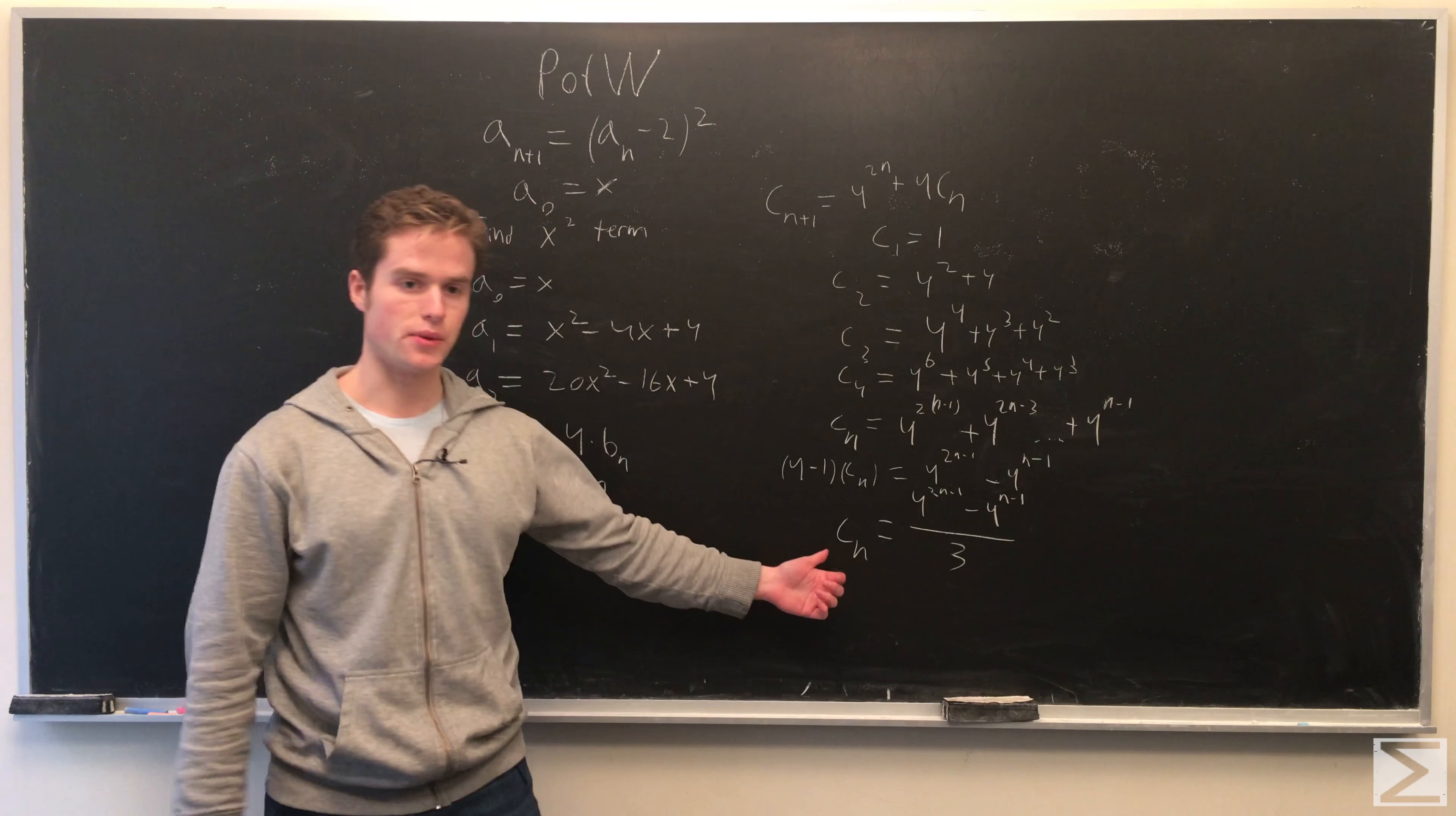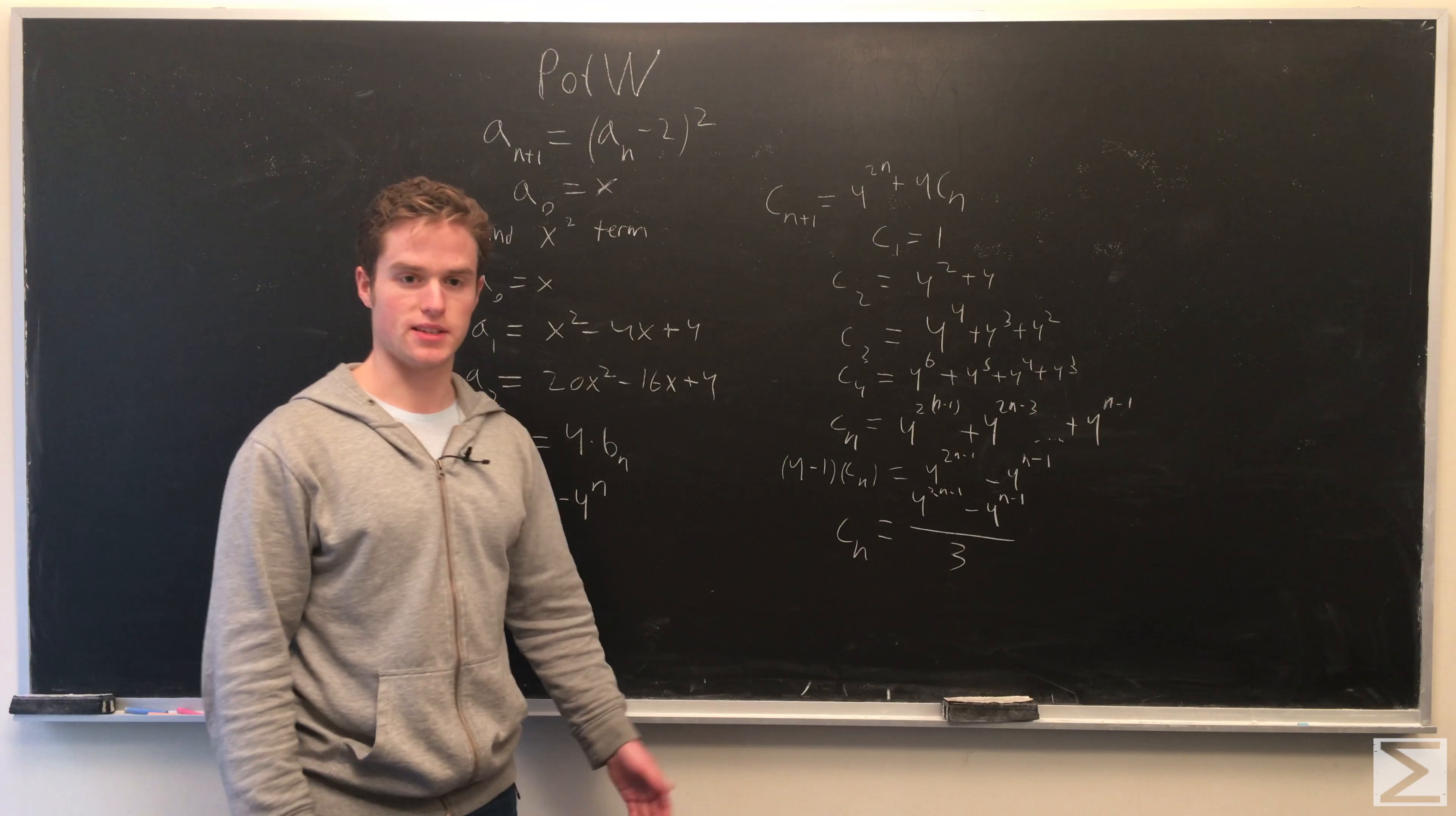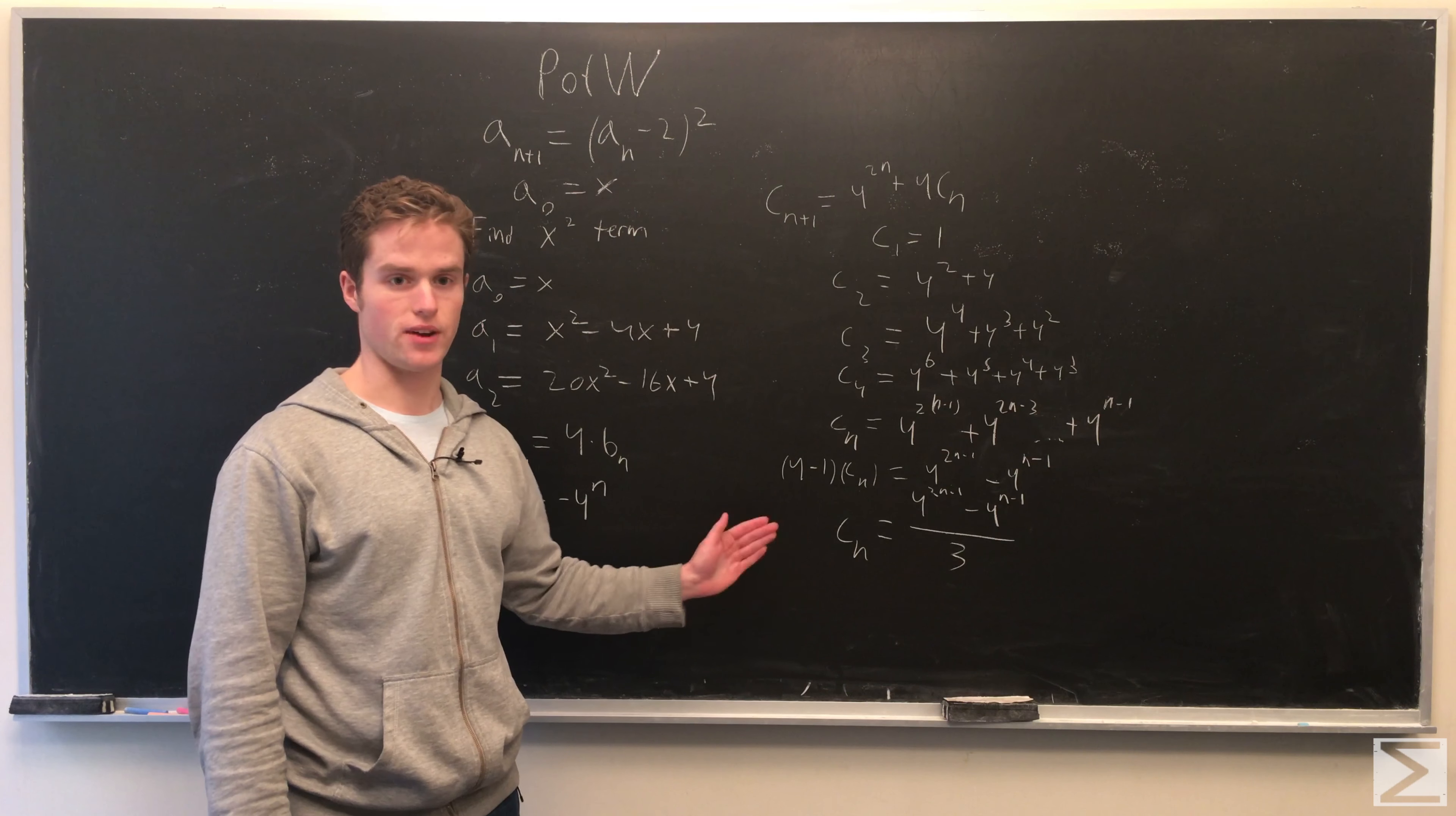And we can check it. For n equals 1, we have 4 minus 1 over 3. That's 1. For n equals 2, we have 4 of the 3 minus 4, which is 60 over 3, which is 20, which lines up with this. So, we see that it works, and we prove that it is, in fact, true.